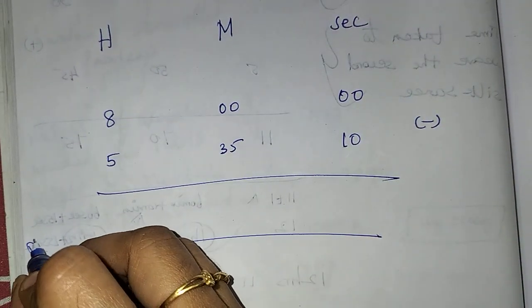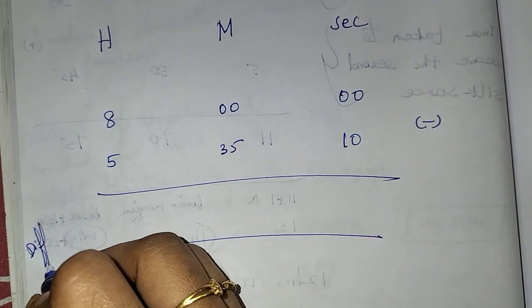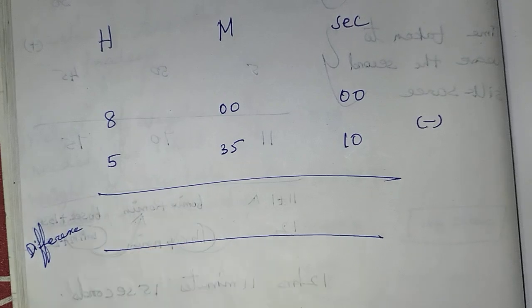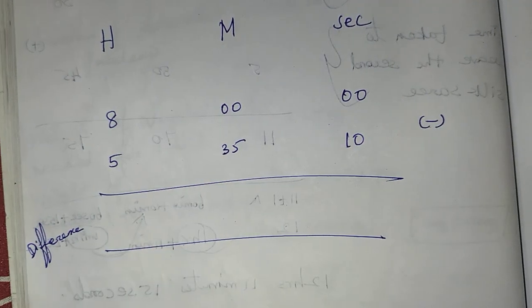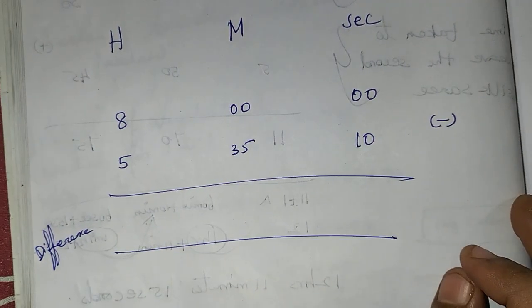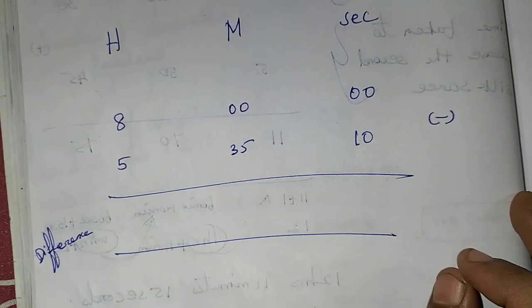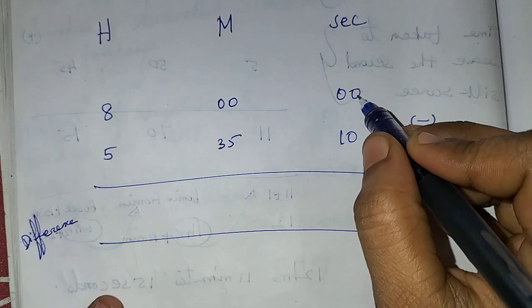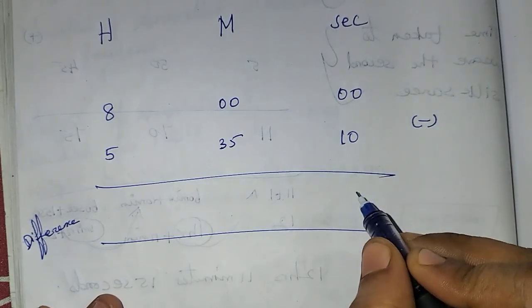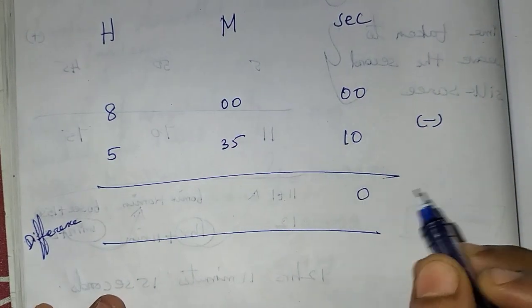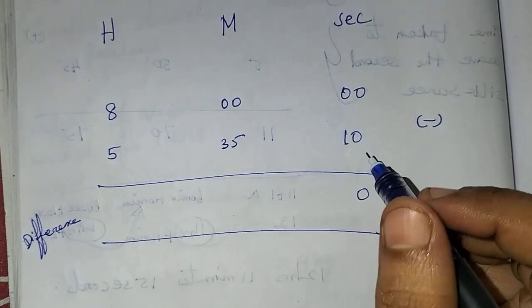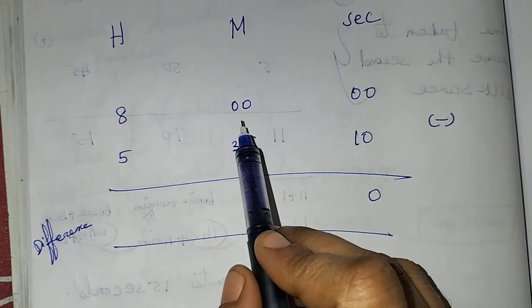We need to find the difference. Now we have to subtract. 0 minus 0 is 0. For 0 minus 1 in the seconds column, we need to borrow.